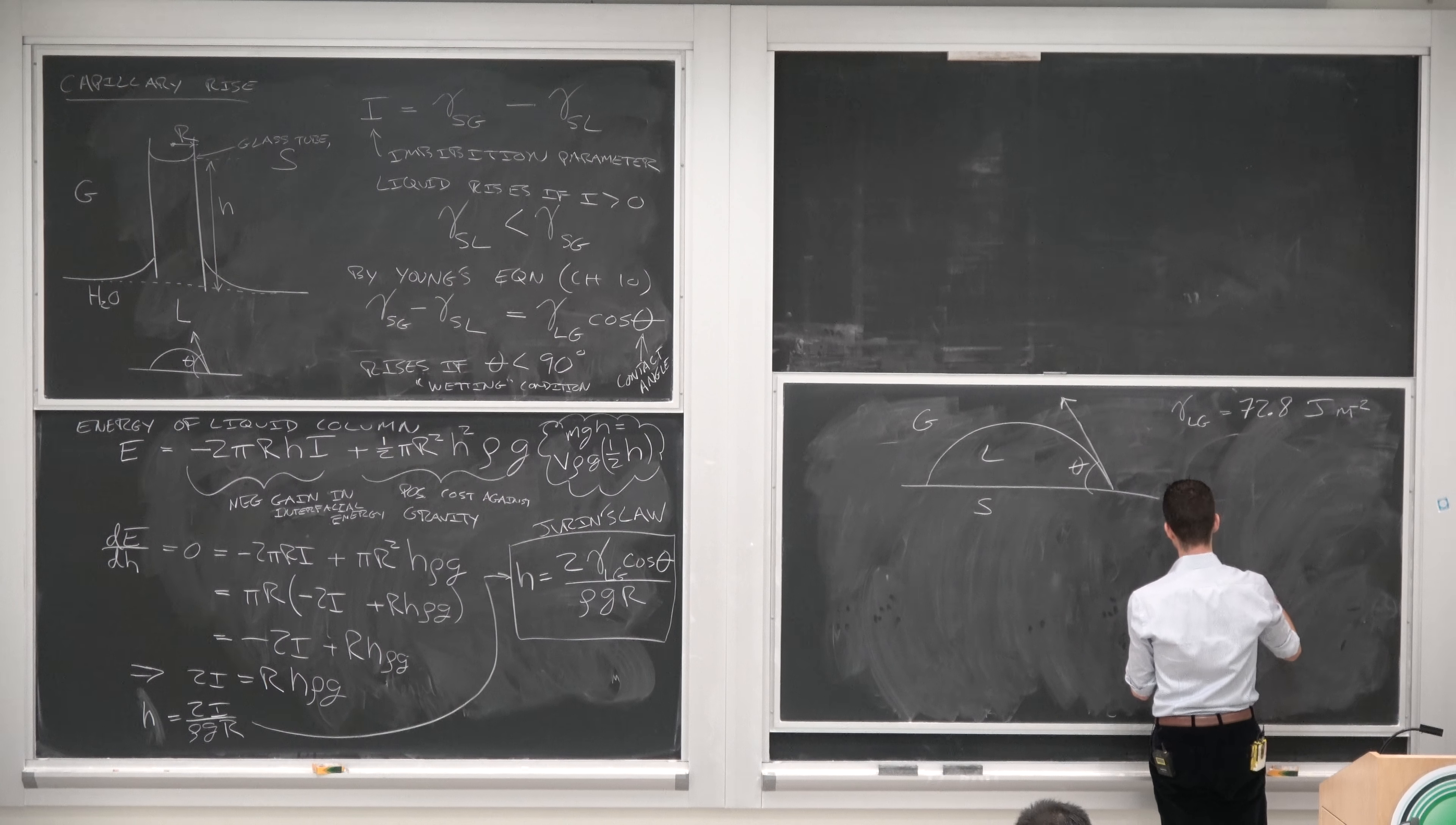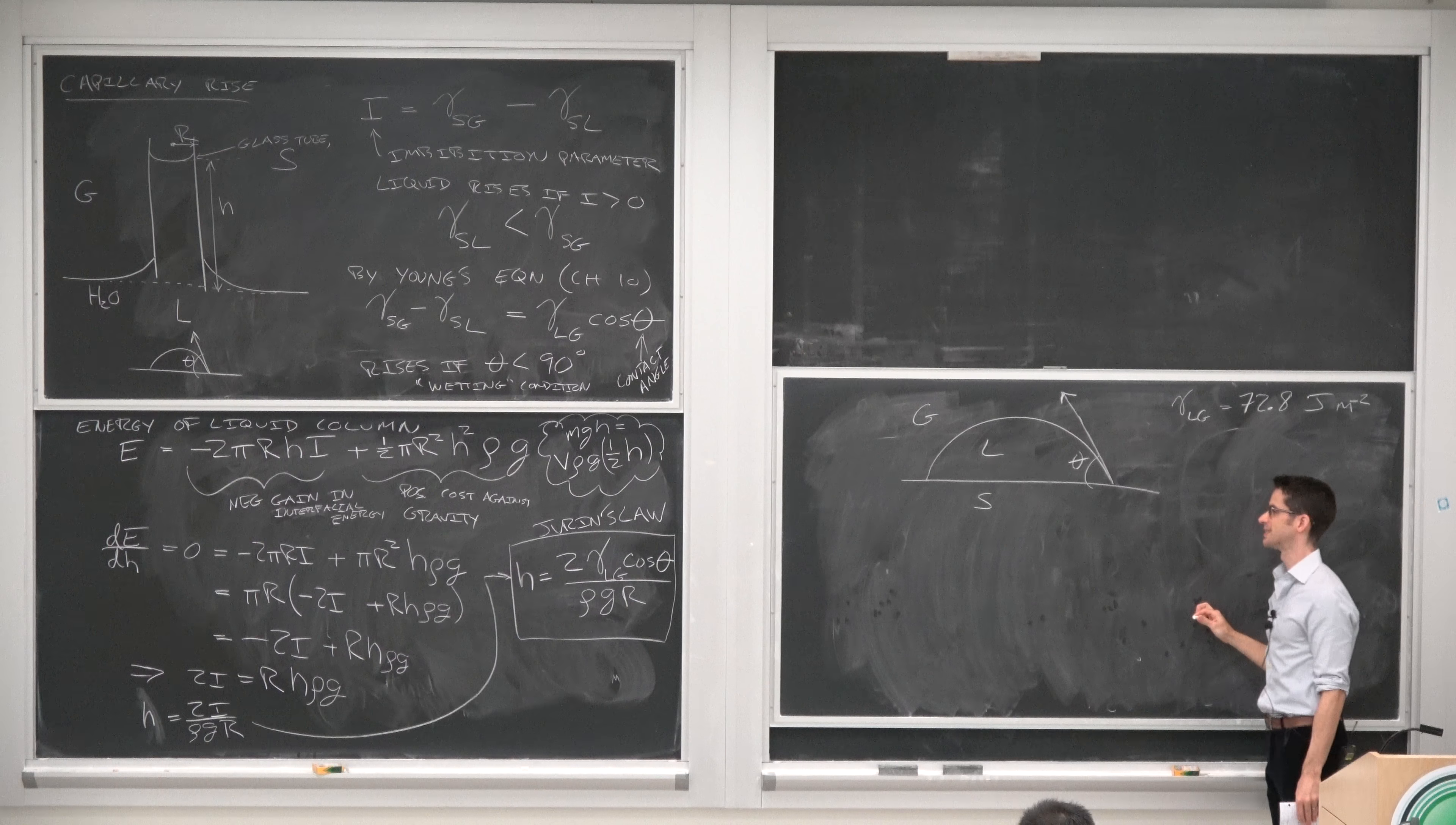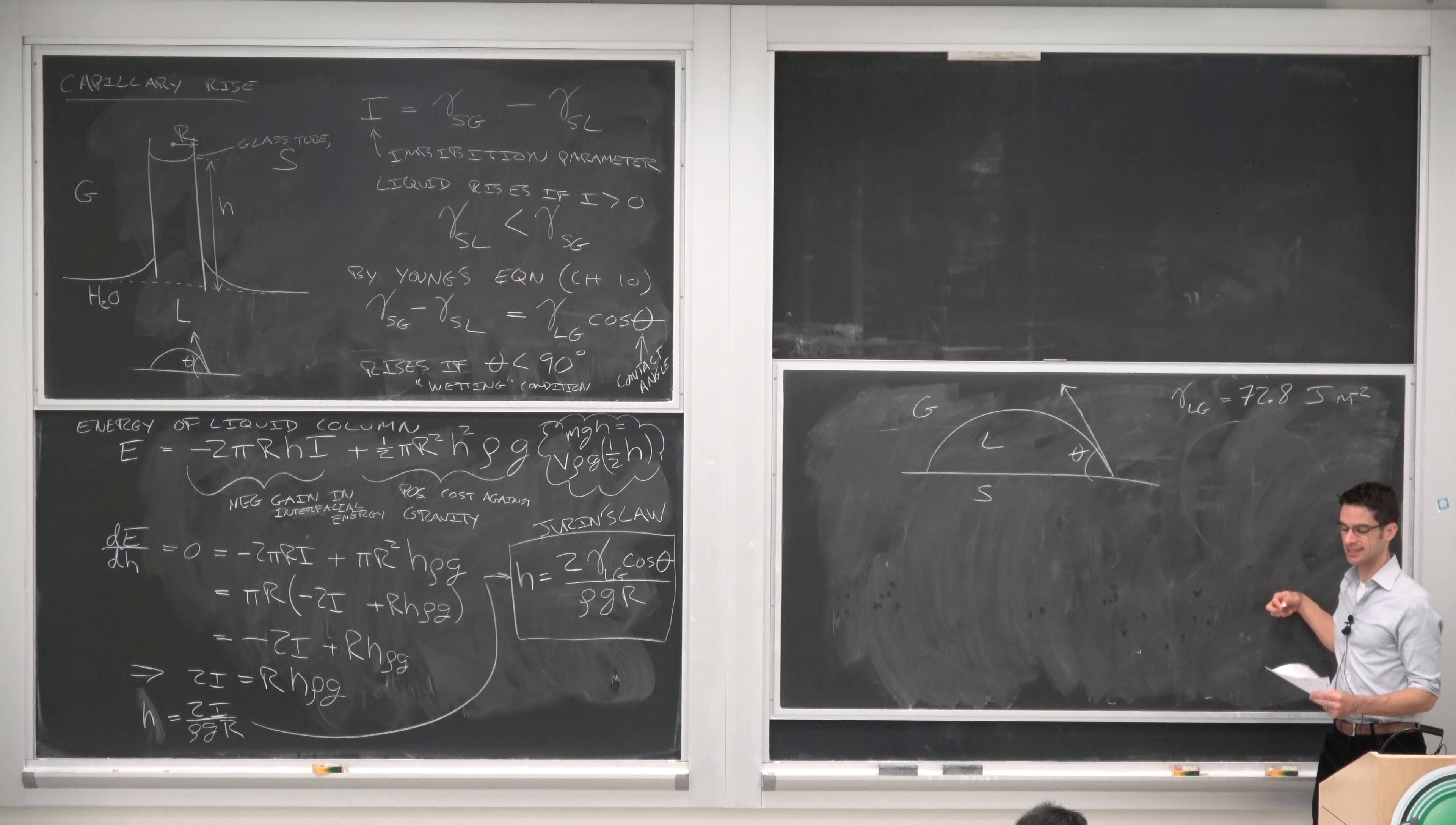Remember that the surface energy and the surface tension of the liquid have the same numerical value but different units. So suppose we're given a question: is this surface most likely to be Teflon, polyethylene, or cellulose?